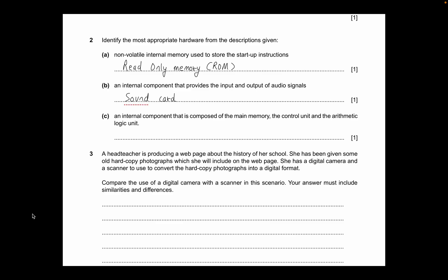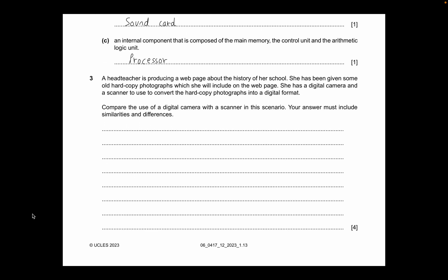The next description: an internal component composed of the main memory, the control unit, and the arithmetic logic unit. This is part of the von Neumann architecture, so you need to revise that concept. The answer is a processor, also known as a Central Processing Unit — CPU. You can write either 'processor' or 'Central Processing Unit'.